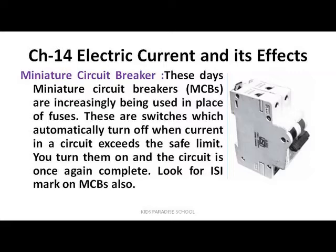Because we use appliances in our homes, they are of different values and take different amounts of current — more or less. If you have a washing machine, it will automatically take more power. Your mixer grinder will take more. An iron will take more. Your TV will take less, and your tube light will take less. So circuits are built accordingly, and fuses are used.